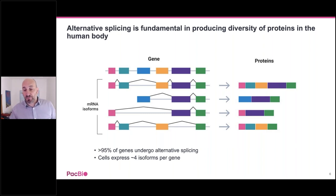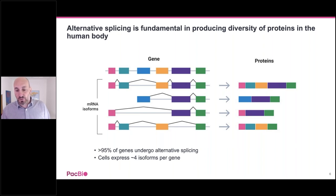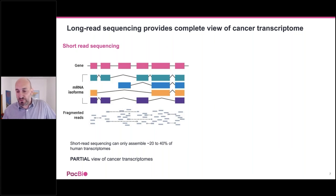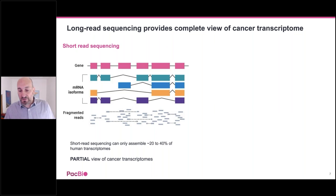These isoforms are then translated into proteins with different domain structures and often different functions. In normal cells, more than 95% of genes undergo alternative splicing, with a rough estimate of about four splice isoforms per gene. When we do short-read sequencing, you have to align short fragments to a reference genome and are only able to reconstruct an estimated 20% to 40% at most of the transcriptome. This intrinsic limitation in the discovery of novel isoforms likely underestimates the impact of isoforms in cancer, and results in a really partial view of the true biology of cancer.